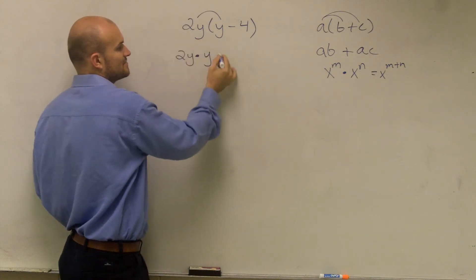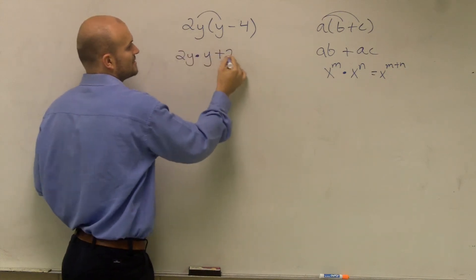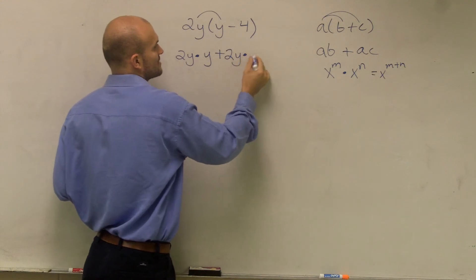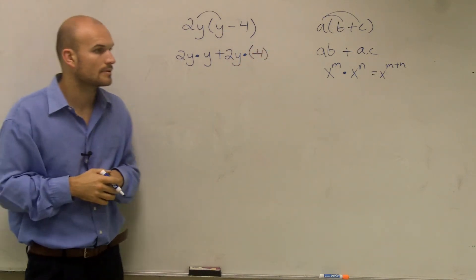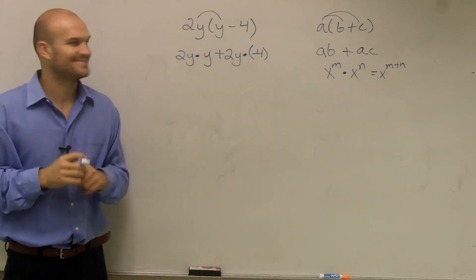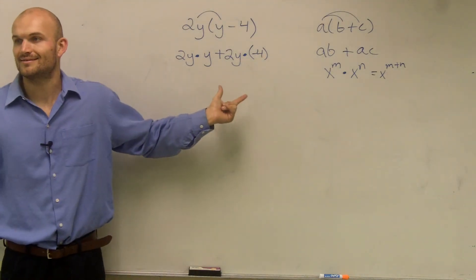Then, since that's a positive 2y, it's another positive 2y times, I'll put it in parentheses since it's negative, a negative 4. Did you guys see that?